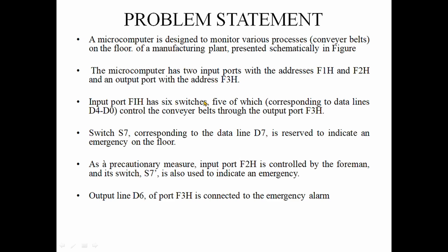There are six switches in the input port at the F1H address. We use five switches — S0 to S4 — on the conveyor belt to monitor the floor. The value will control the F3H output port using D4 to D0 data lines. There are 5 switches mapped to the R switch.